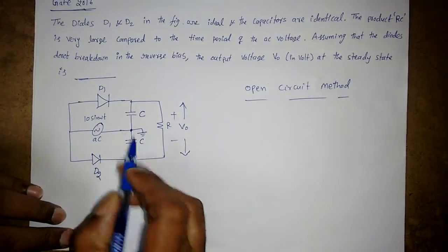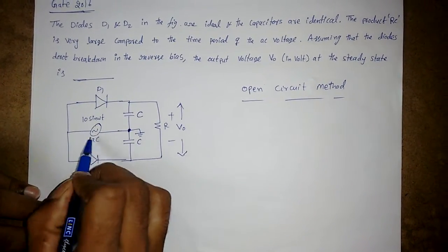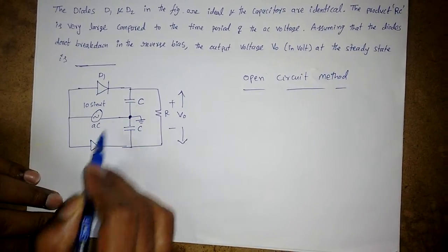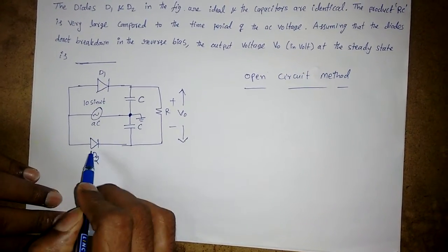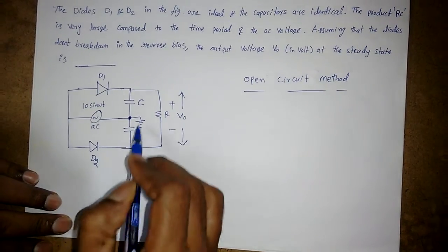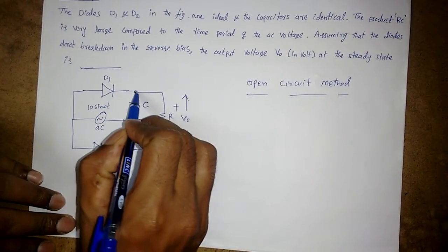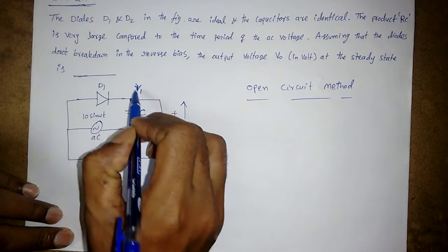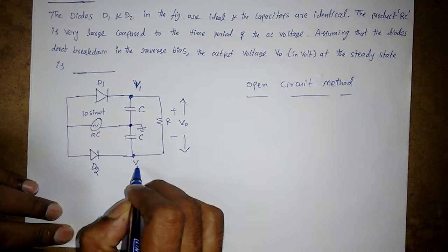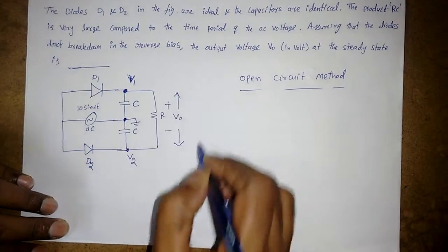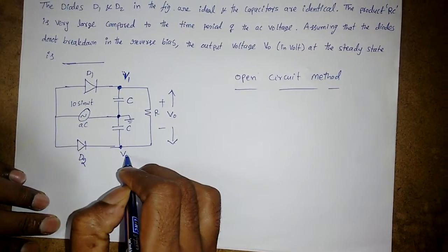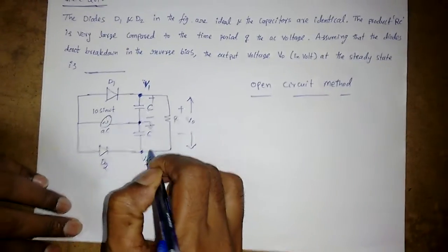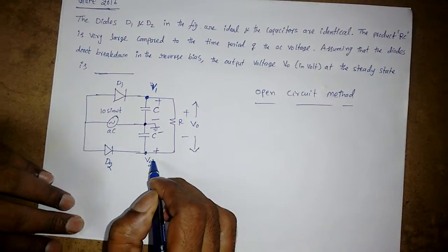Now if you look at this circuit, the common terminal is here. I am applying a voltage source across this diode and capacitor. Similarly, the same source across this diode and the capacitor. I am assuming V1 here and V2 here, then I can apply KVL to find V1 and V2.